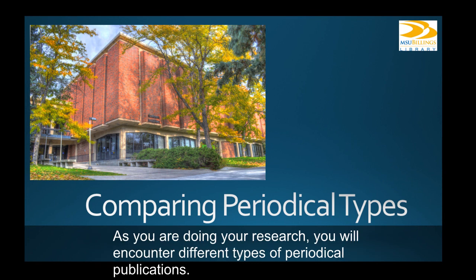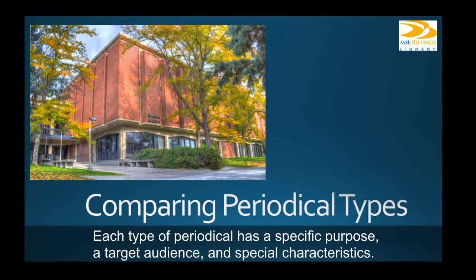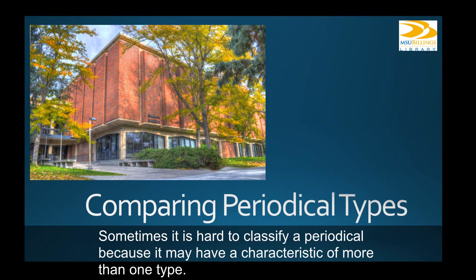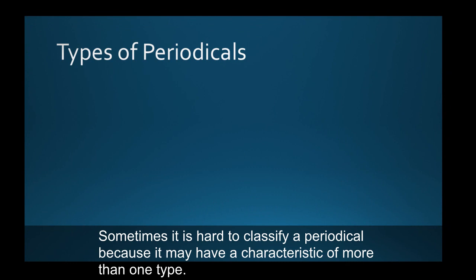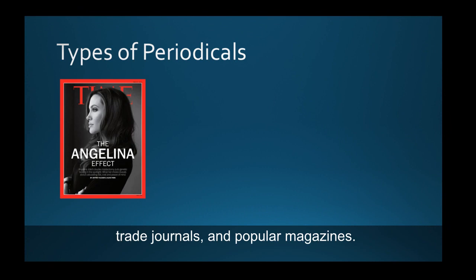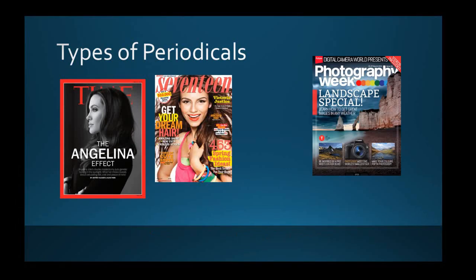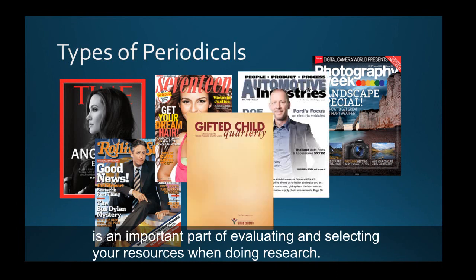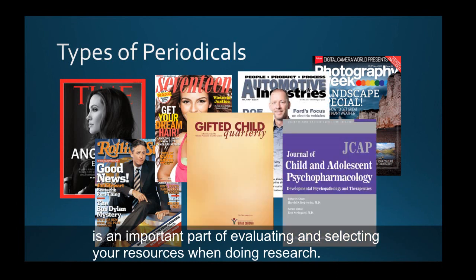As you are doing your research, you will encounter different types of periodical publications. Each type of periodical has a specific purpose, a target audience, and special characteristics. Sometimes it's hard to classify a periodical because it may have a characteristic of more than one type. This tutorial will provide some general criteria to help you distinguish between scholarly journals, trade journals, and popular magazines.